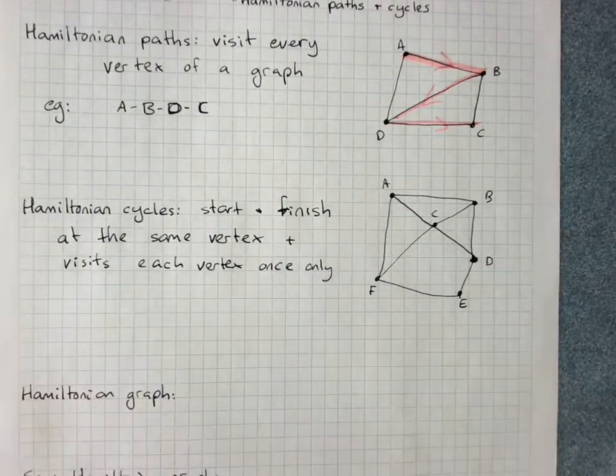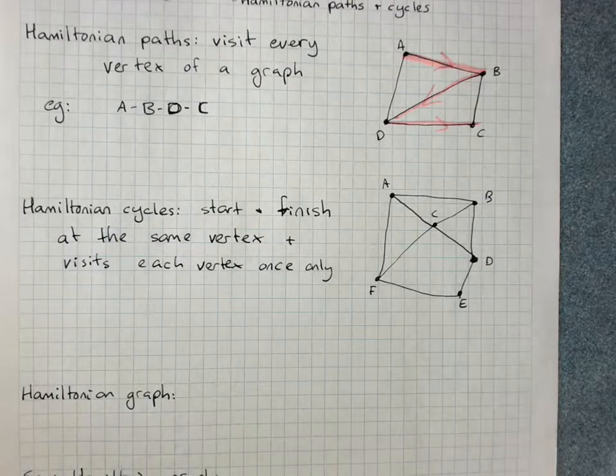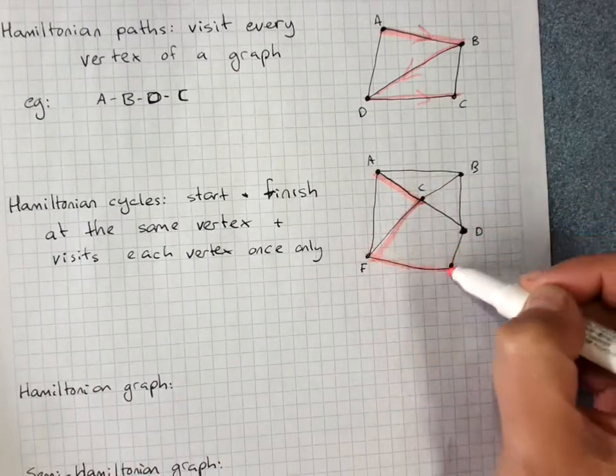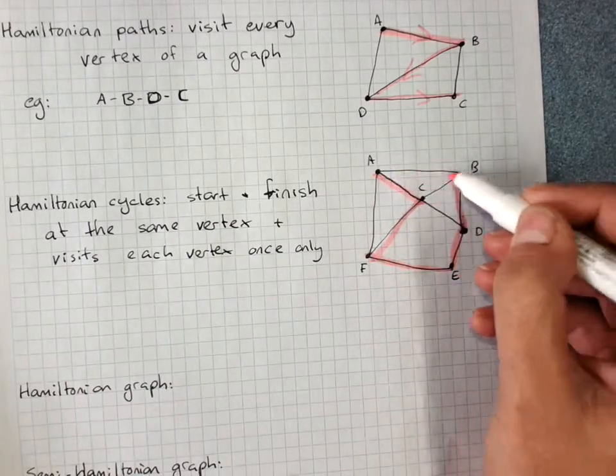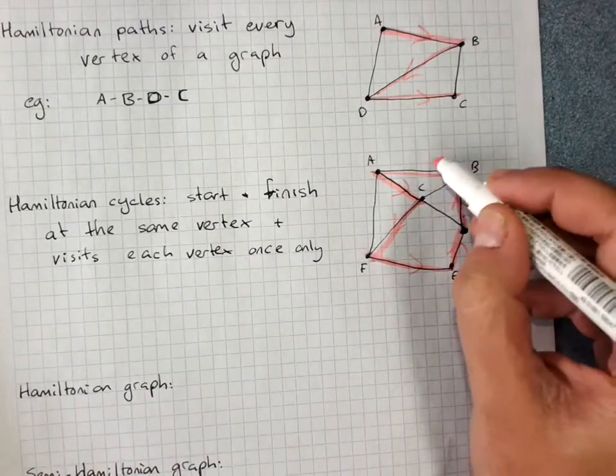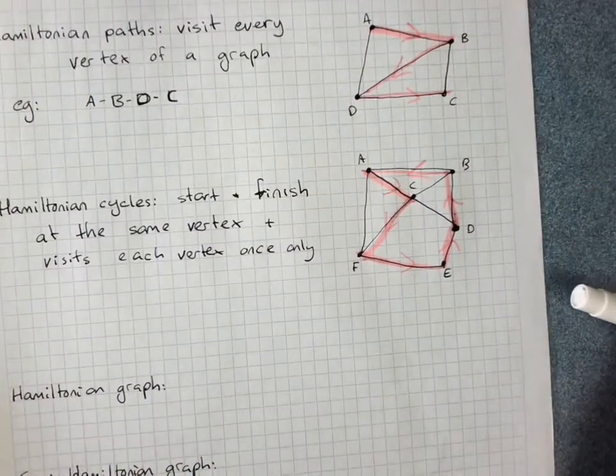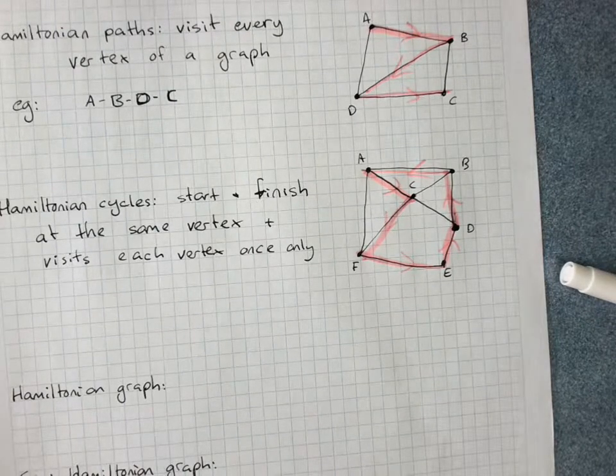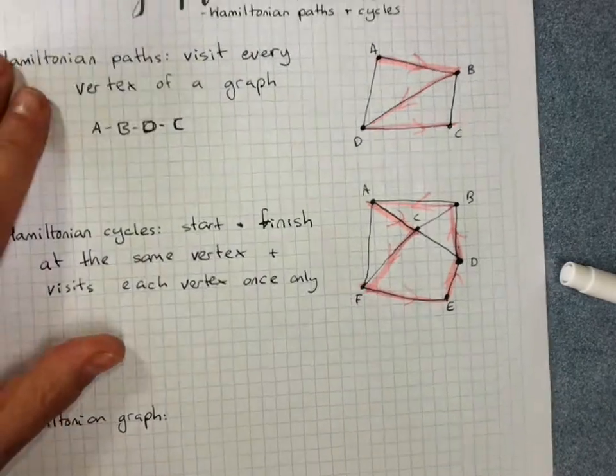So a Hamiltonian cycle could, for example, start at A. So you'll see it doesn't need to touch every edge, but it does have to go to every vertex once and only once.